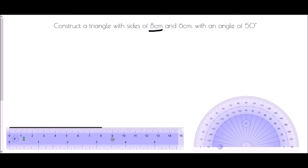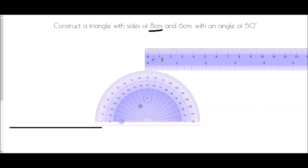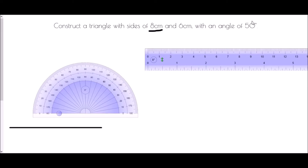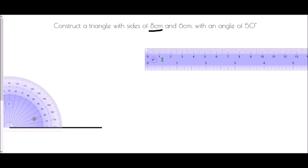Now I'm going to take the ruler away and come to the protractor, because what I'm going to do is draw the angle next. I'm going to draw the angle between the two sides that I've been given, so I'm going to set up the protractor at the left hand side of my line. I'm using the inside numbers here because that is where the zero is, in order to measure my 50 degrees — so 10, 20, 30, 40, 50 — and I'm going to make a mark at that 50 degrees.